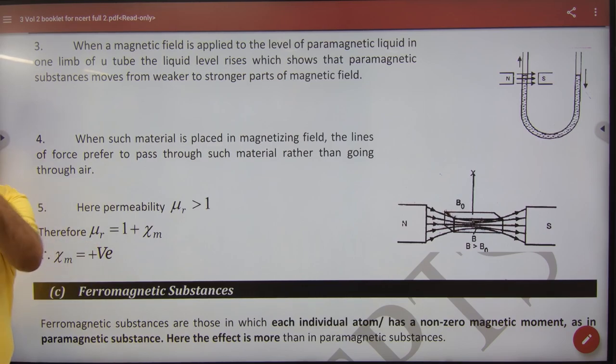Remember, if a question states that a material has chi positive, then chi is positive means either para or ferro. Chi is negative, it will be diamagnetic.